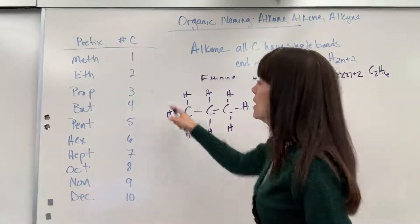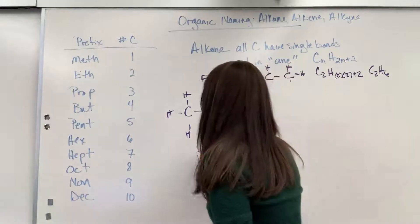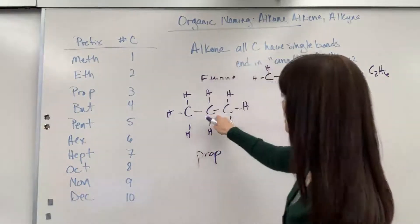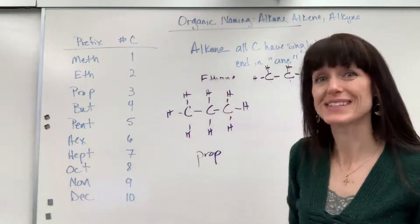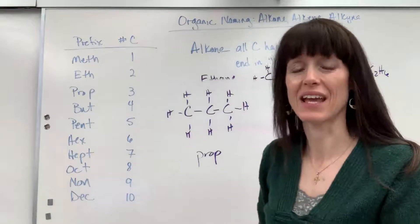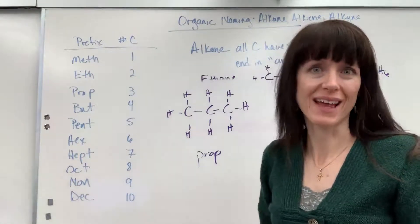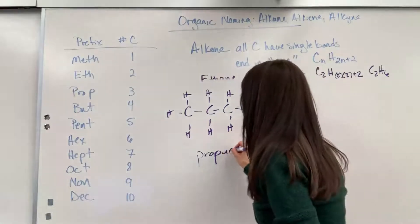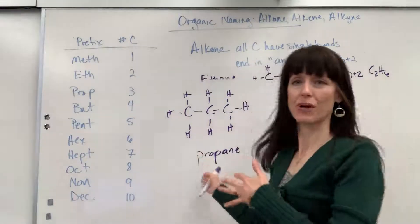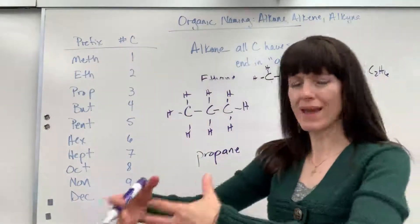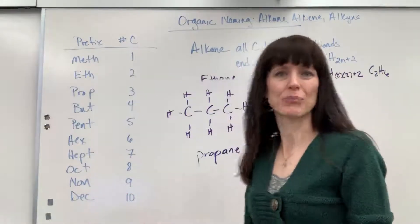So first thing I always do is count my carbons. One, two, three. The prefix for three is prop. Then I look at the bonds. They're all single bonds. So this is going to be an alkane, classified as an alkane. The ending for single bonds, alkanes, A-N-E. So this is propane. This is what we use for our barbecue grill. Those great big white round containers hold propane gas.